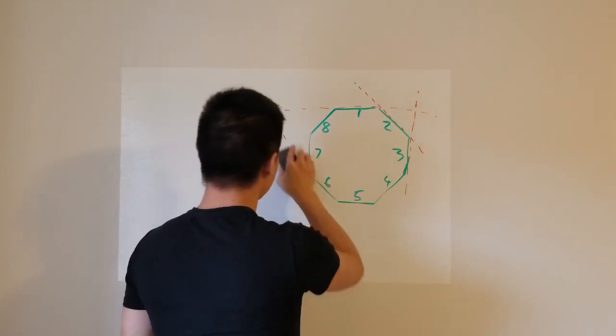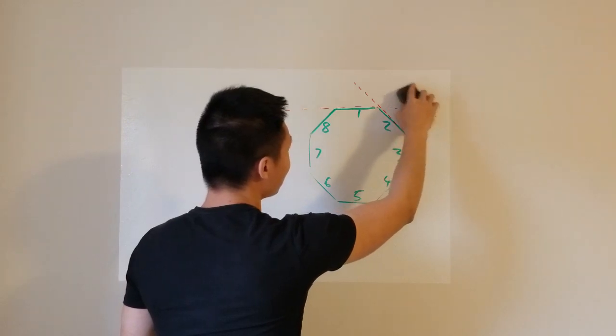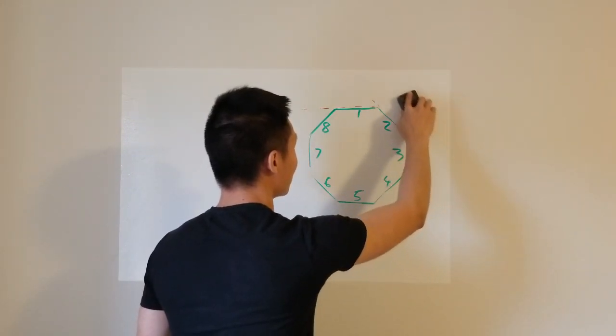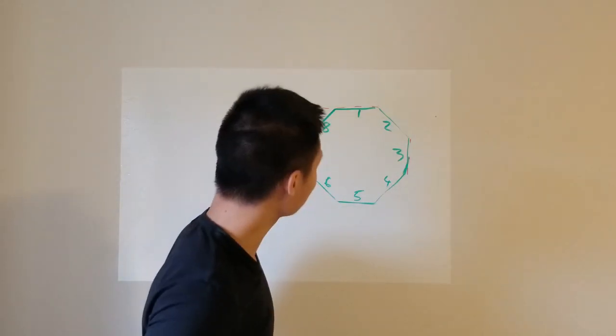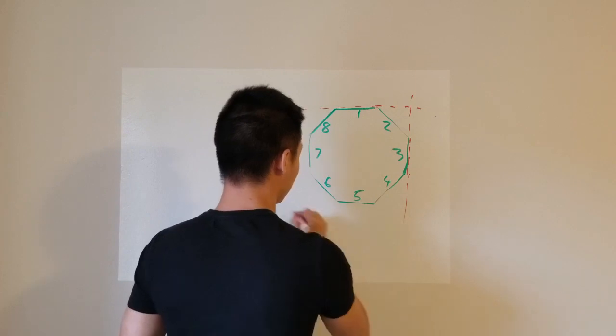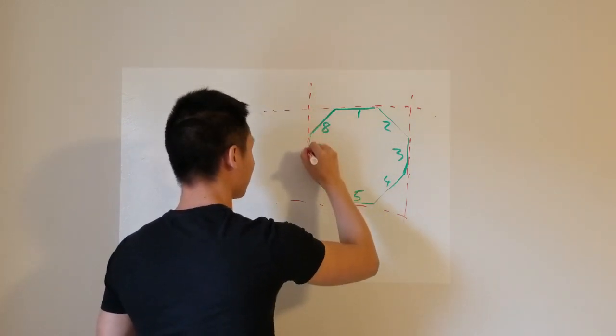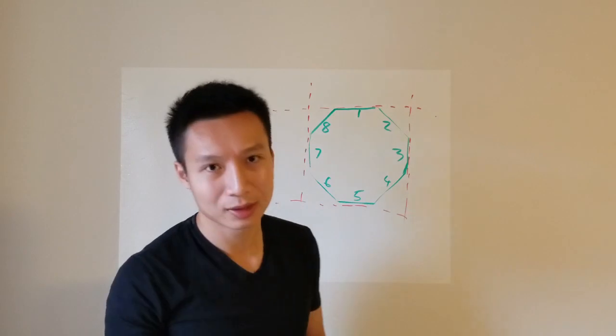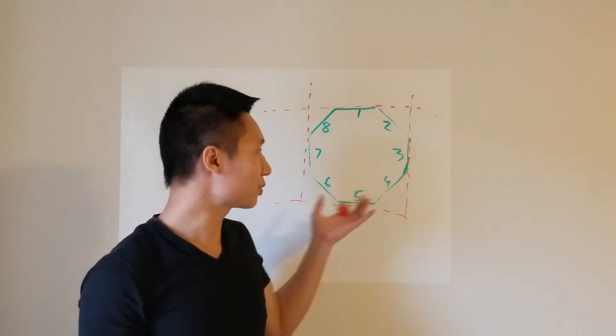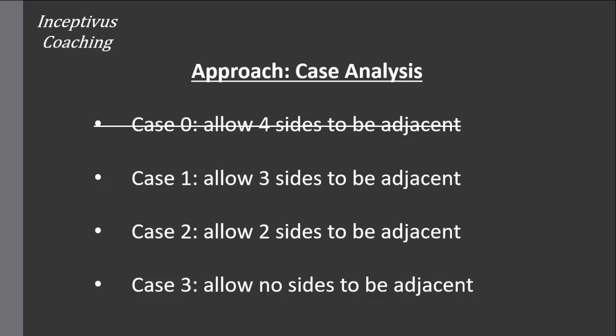So you will then realize that the more spread out these sides are, then the more likely they're going to close off. So for example, I chose number 1, number 3, number 5, and number 7. So in this case, none of the sides are together and it is exactly guaranteed that these 4 sides will enclose.